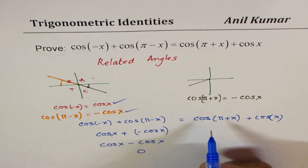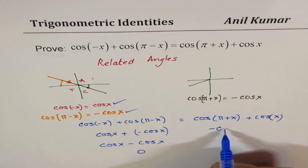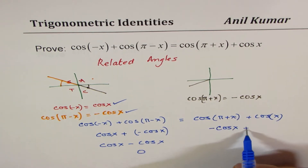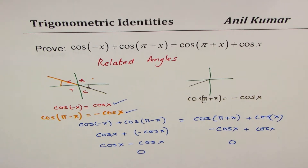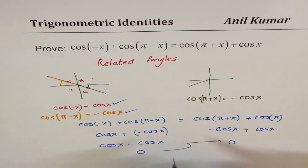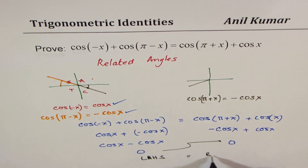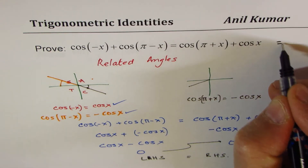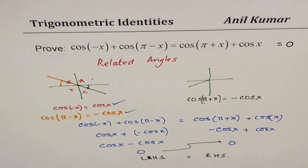On the right-hand side: cos(π + x) + cos(x) = -cos(x) + cos(x) = 0. Since 0 = 0, the left-hand side equals the right-hand side. So that is how using related acute angles we can easily prove some identities.